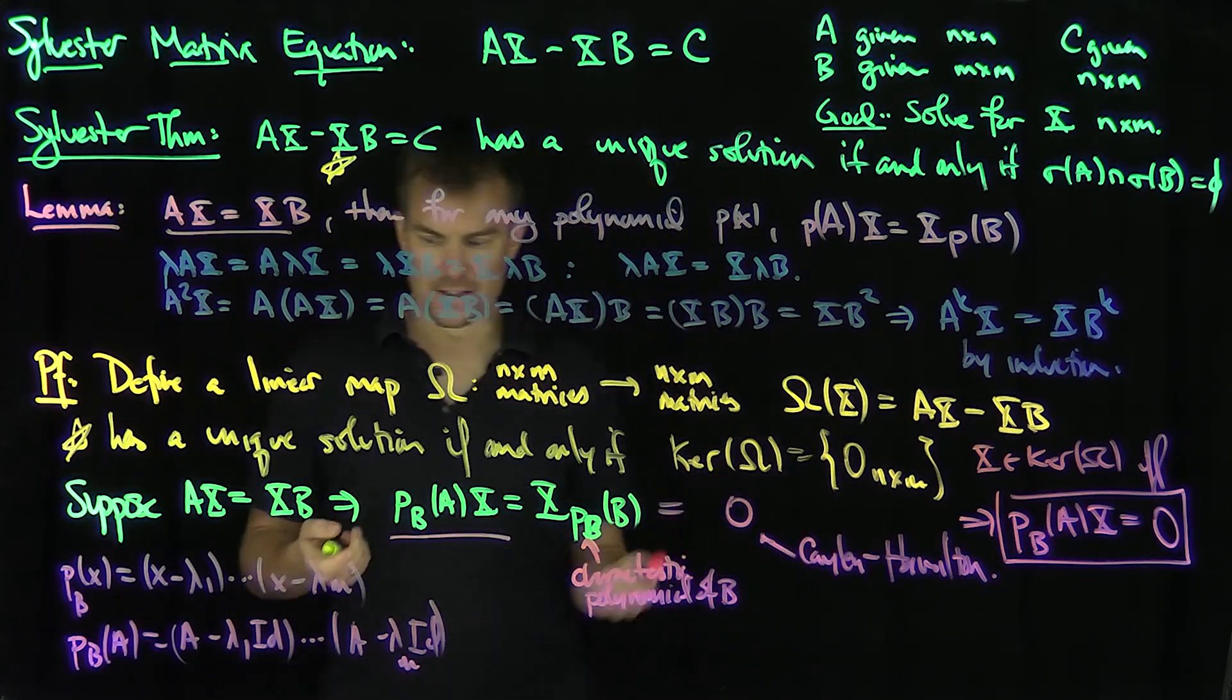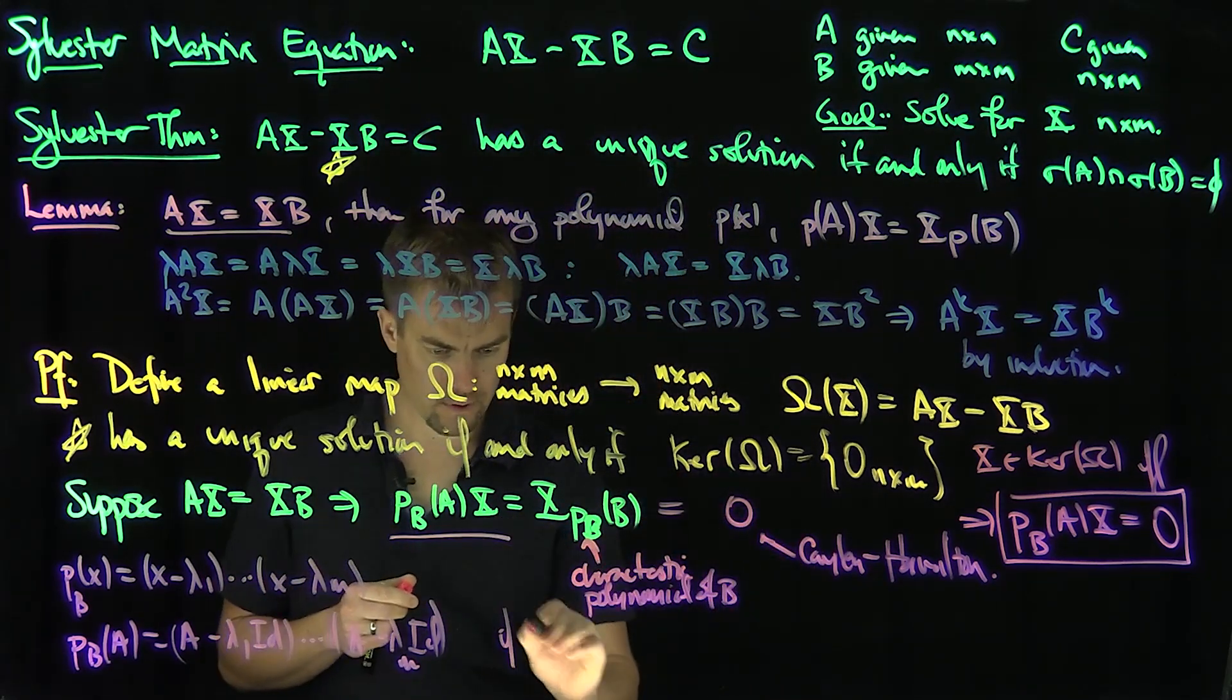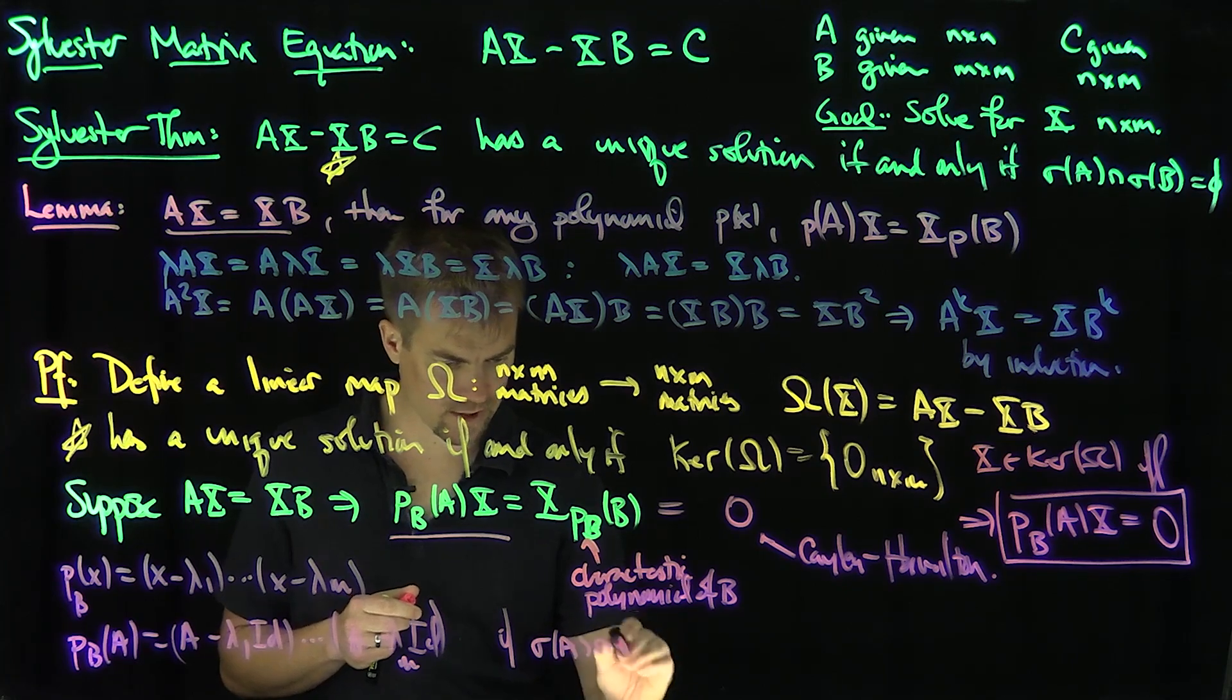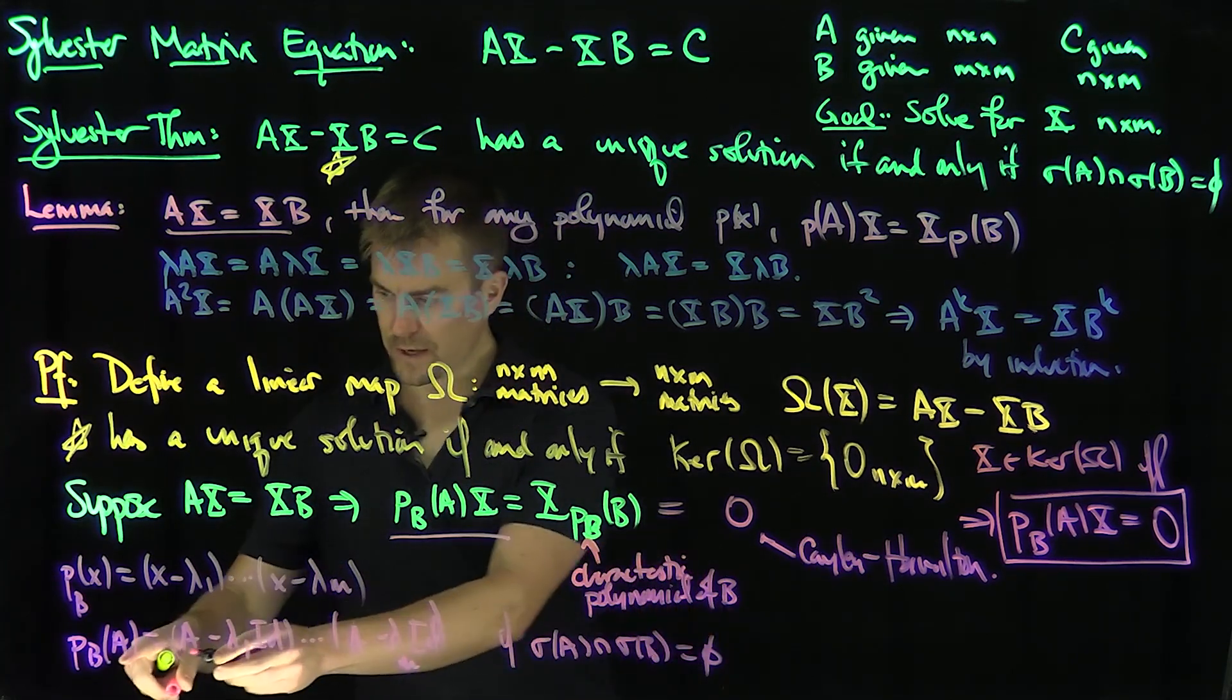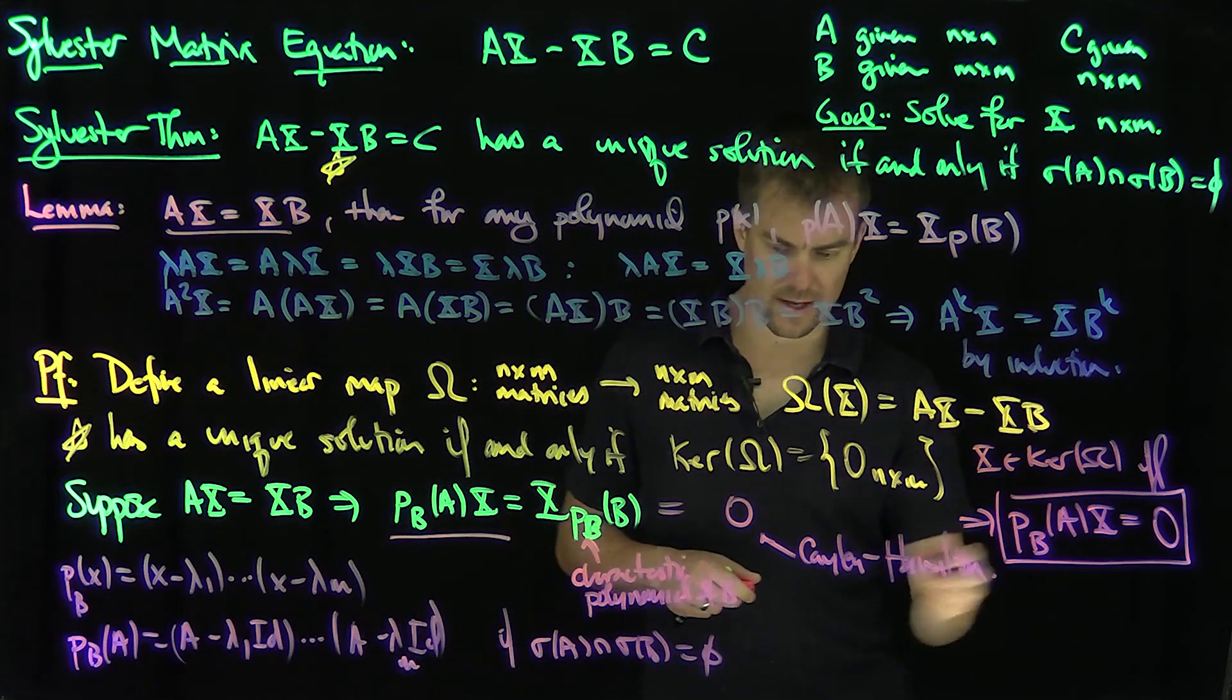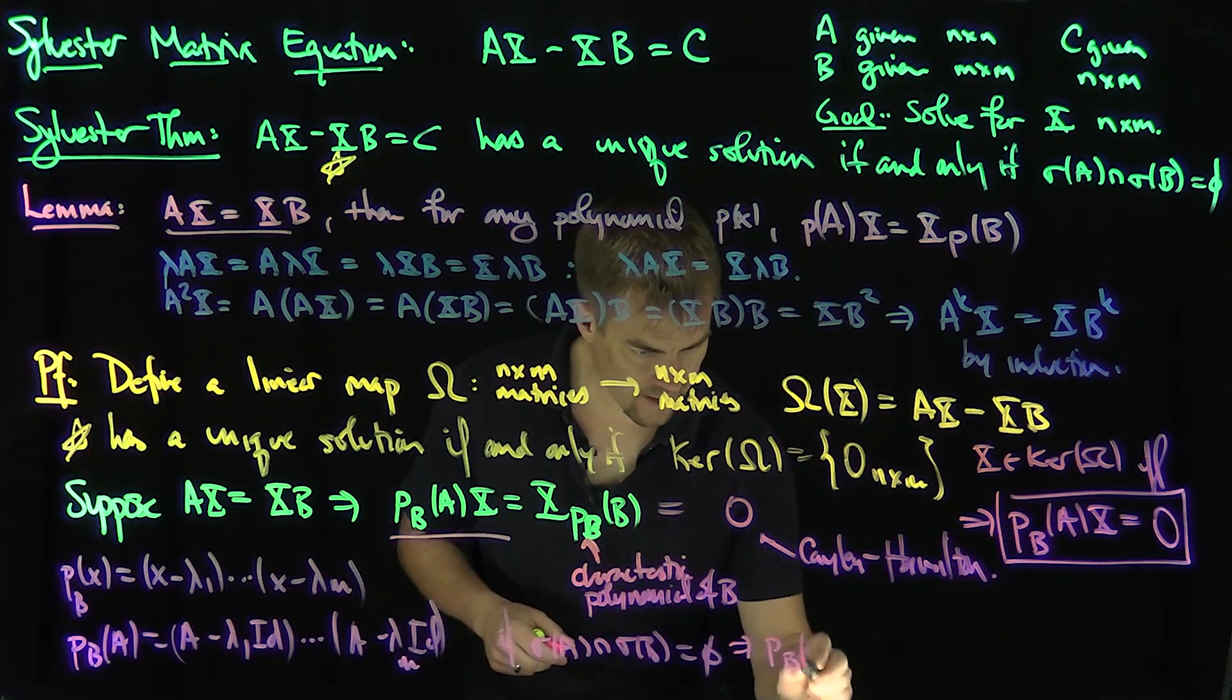Now, the first thing is that if the spectrum, so if sigma A intersects sigma B is empty, then this matrix over here is invertible. Then this would be non-singular. Then that says that p_B(A) is non-singular,